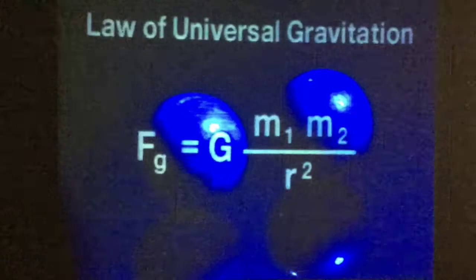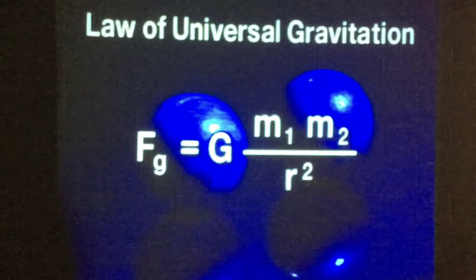Newton determined that gravitation was universal, and that the force acting between two objects depends solely on the mass of the objects and the distance separating them. To describe this mathematically, Newton created the law of universal gravitation involving the constant G.